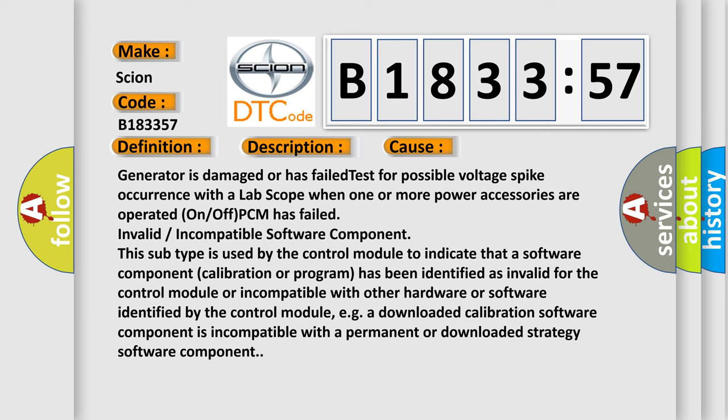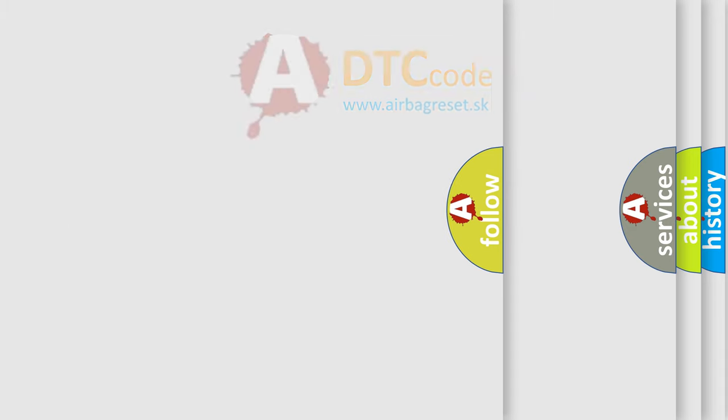Generator is damaged or has failed. Test for possible voltage spike occurrence with a lab scope when one or more power accessories are operated on or off. The PCM has failed. Invalid or incompatible software component. This subtype is used by the control module to indicate that a software component calibration or program has been identified as invalid for the control module or incompatible with other hardware or software. For example, a downloaded calibration software component is incompatible with a permanent or downloaded strategy software component.